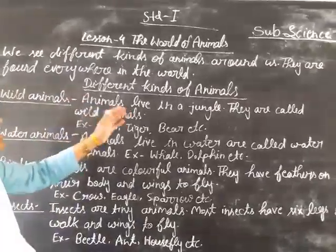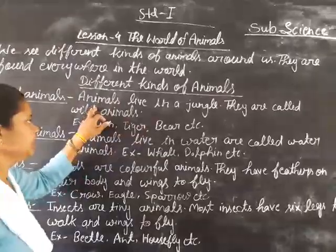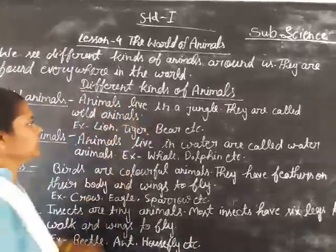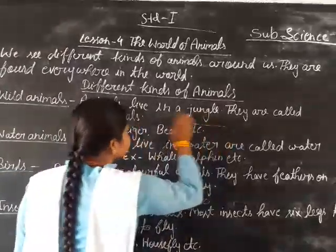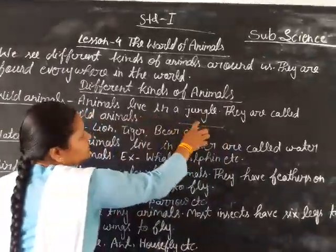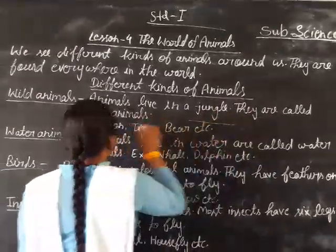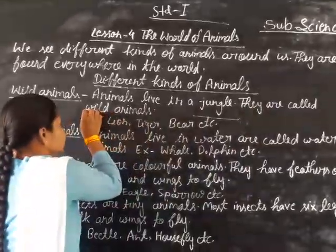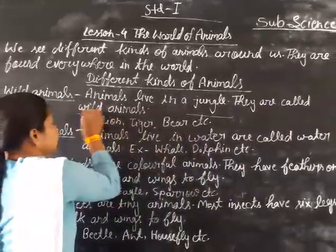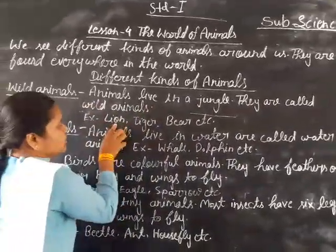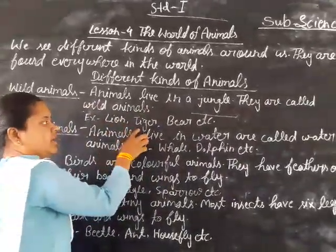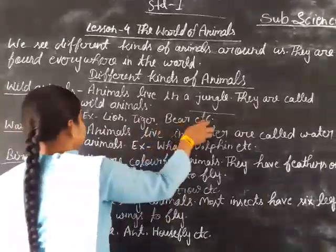Animals that live in the jungle are called wild animals. For example, lion, tiger, deer, etc.